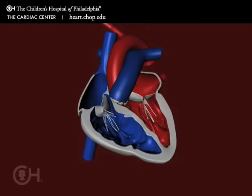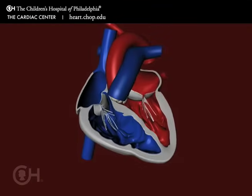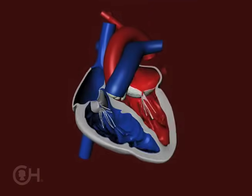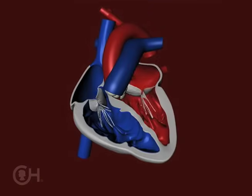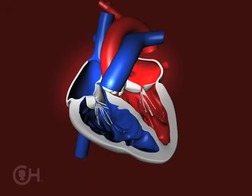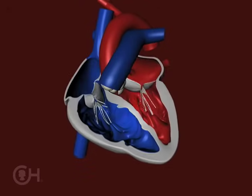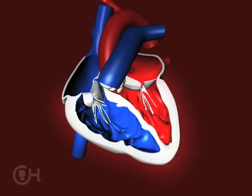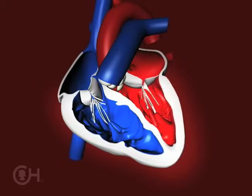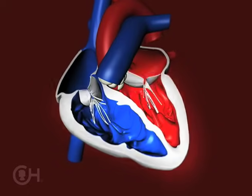The normal heart has two sides, a right side and a left side, and four chambers: the top receiving chambers, or atrium, and the lower chambers, which are thick-walled pumping chambers called ventricles.